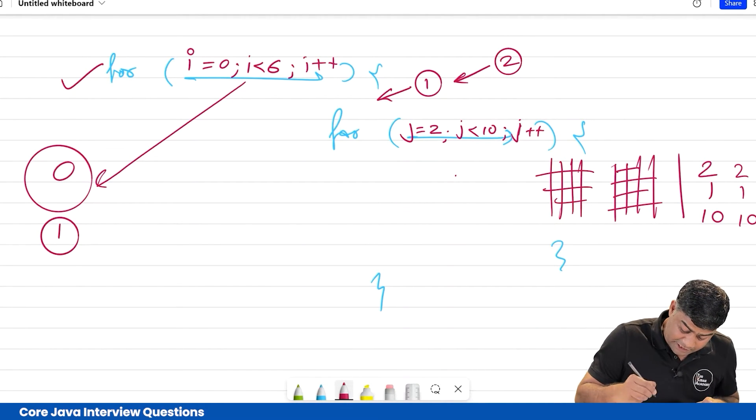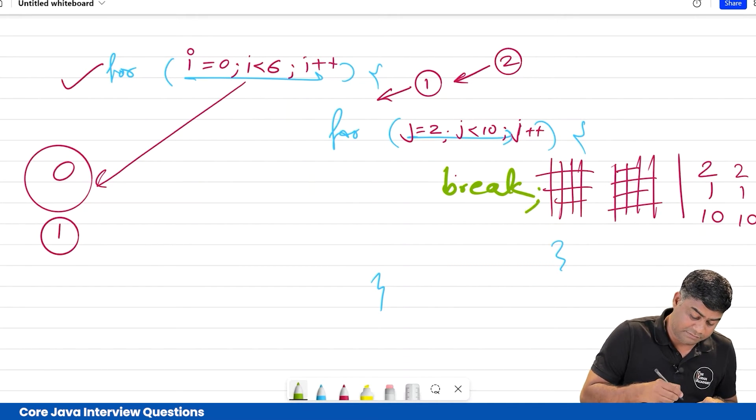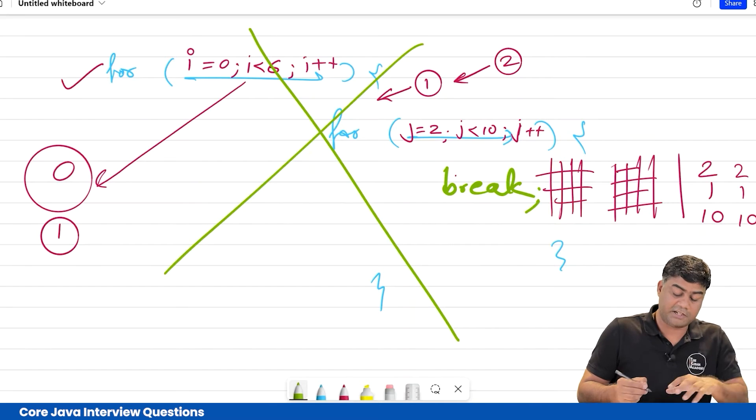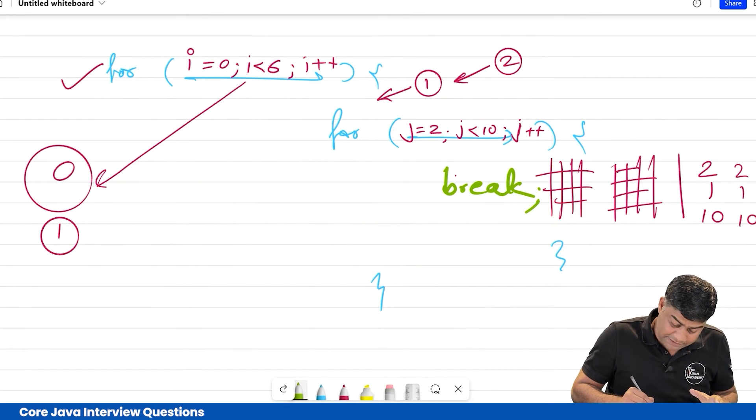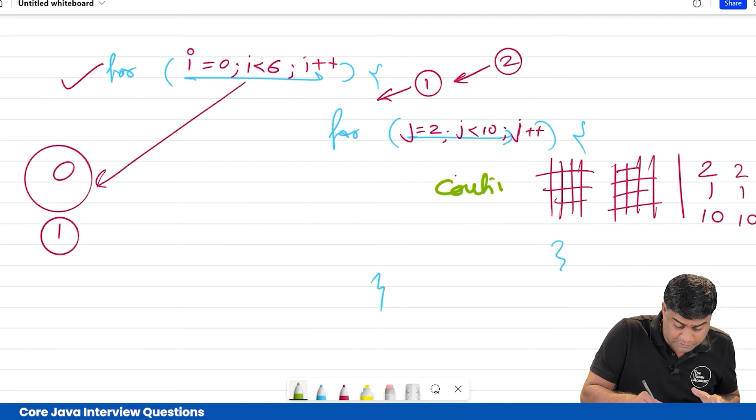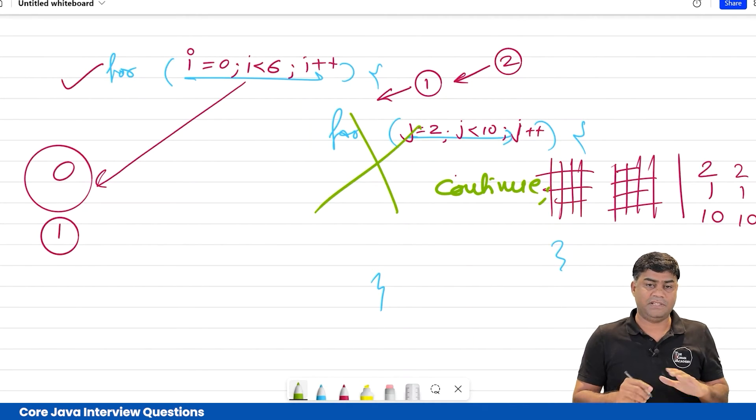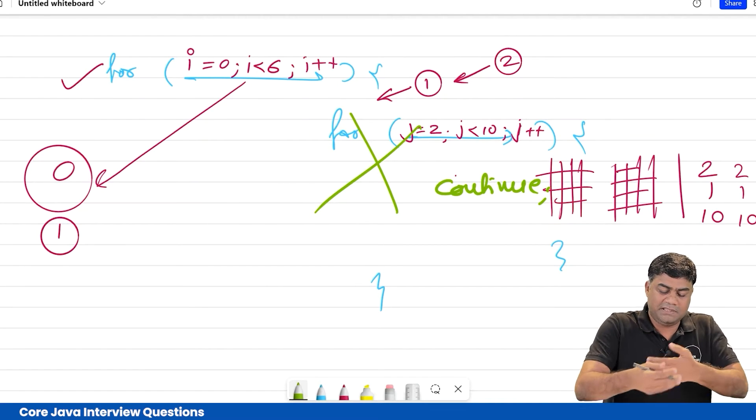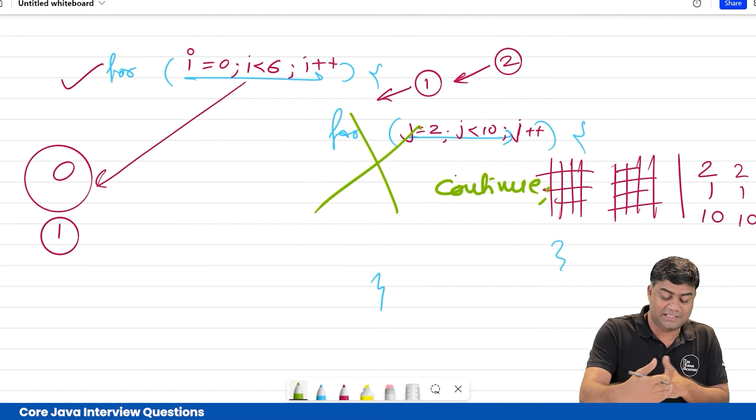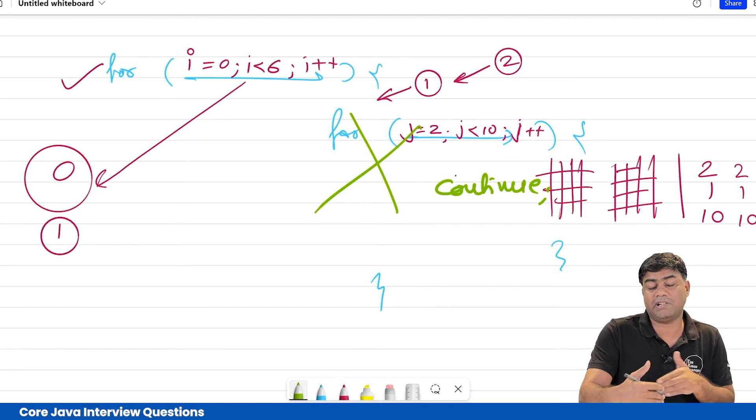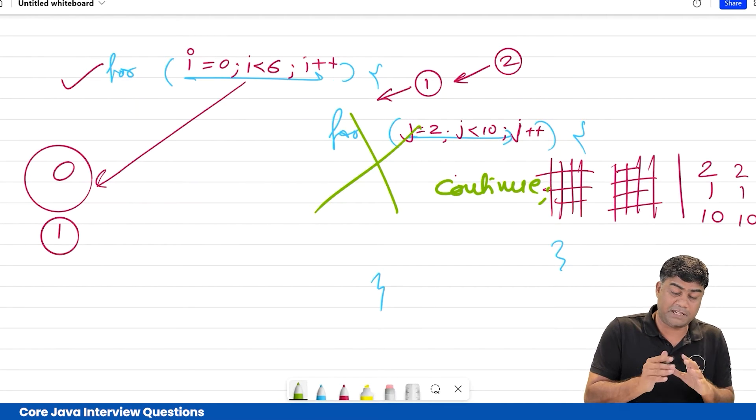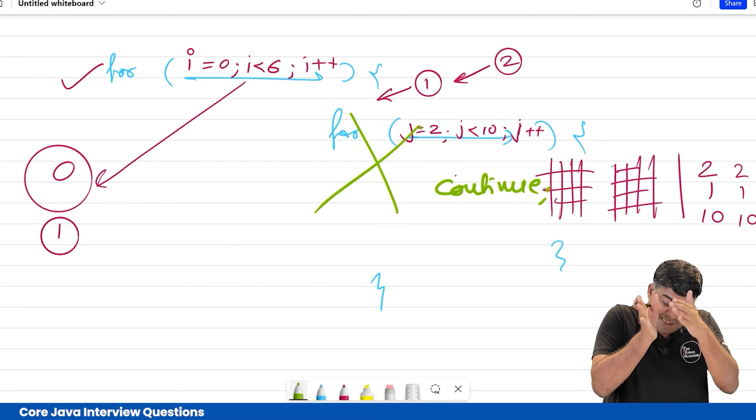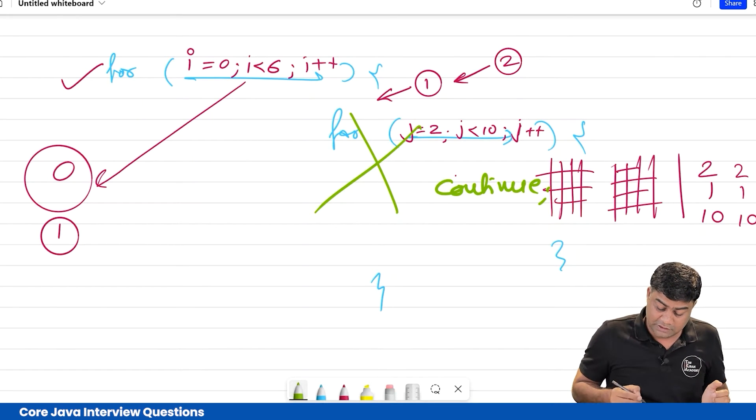If you write here, try to understand one concept guys, it's very important. If you write break, then everything will be vanished, it comes out of it. But if you write continue, then this for loop will get skipped. It executes internally but it continuously not doing anything. Break means terminate everything, continue means current loop that's it.